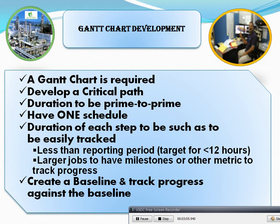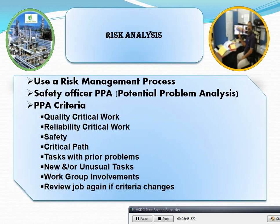Gantt chart development: a Gantt chart is required. Develop a critical path. Duration of each step should be defined. For large jobs greater than 12 hours, create a large target at level 1. Large jobs have milestones or other matrices to track progress. Create a baseline and track progress against the baseline.